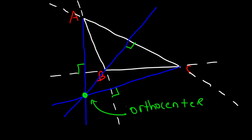An obtuse triangle is a triangle that has one angle greater than 90 degrees — for example, this angle could be about 110 degrees. So now you know how to identify an orthocenter: it's the location where all three altitudes of a triangle intersect.